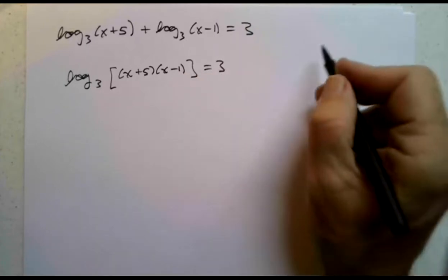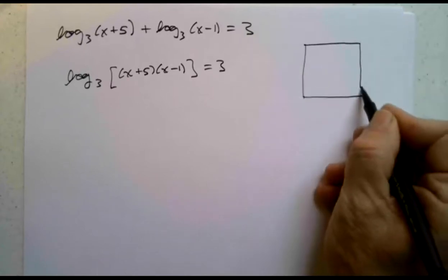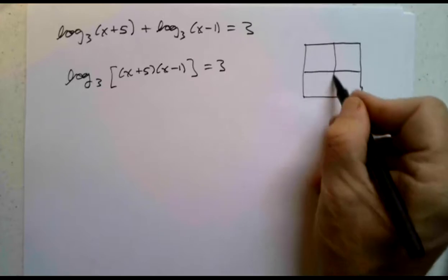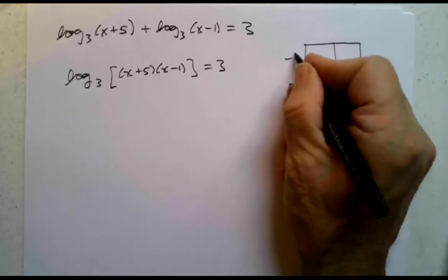So we'll rewrite this as log base 3 of x plus 5 times x minus 1 equals 3. So let's multiply the x plus 5 times x minus 1. And then what do we get?